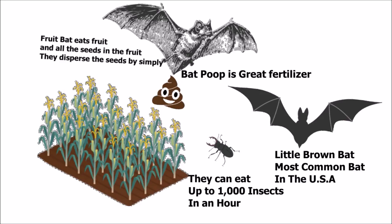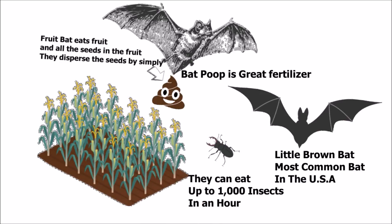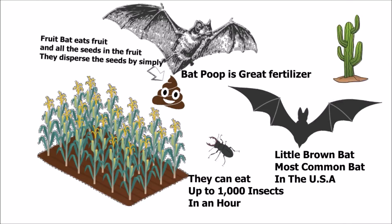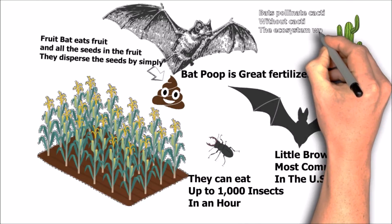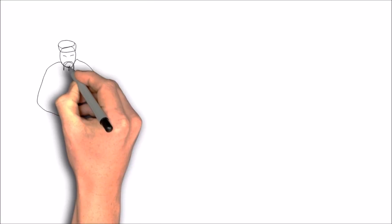And the fruit bat, of course it eats fruit, but when it eats fruit, it eats the whole fruit, the seeds and everything. So, when it does fly around and take a deuce, it's planting a plant. And there are certain bats that can only pollinate cactuses in dry climates, and without them, we would have no cactuses.